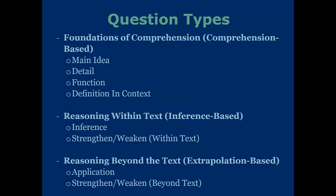There are three core question types based on the 30-30-40 breakdown. The comprehension-based types are called Foundations of Comprehension by the AMCAS. These questions ask whether you comprehend or understand the passage itself — covering the main idea, details, the function of each sentence or word, and definitions in context. Reasoning Within the Text are inference-based questions, also that 30% category. You'll often be asked to strengthen or weaken arguments within the text.